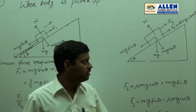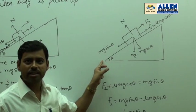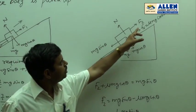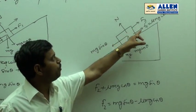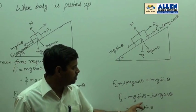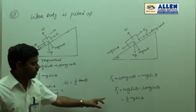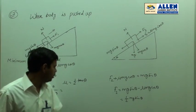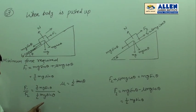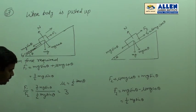In the second case, when the block is prevented from slipping, frictional force acts upward and mg sine theta acts downward. Applying force F2 upward: F2 plus mu mg cos theta equals mg sine theta, so F2 equals mg sine theta minus mu mg cos theta. Since mu equals half tan theta, F2 equals half mg sine theta. Therefore the ratio F1 upon F2 equals (3/2 mg sine theta) divided by (1/2 mg sine theta), giving a ratio of 3. The correct option is option fourth.